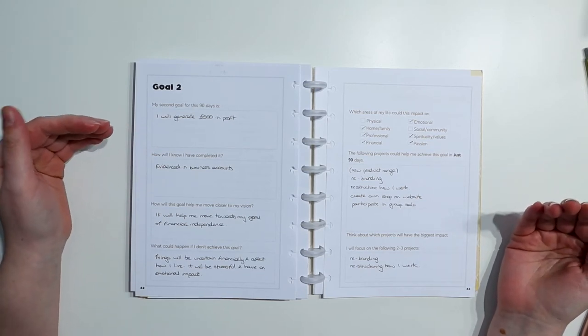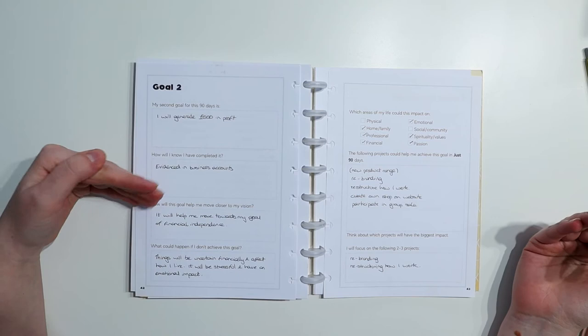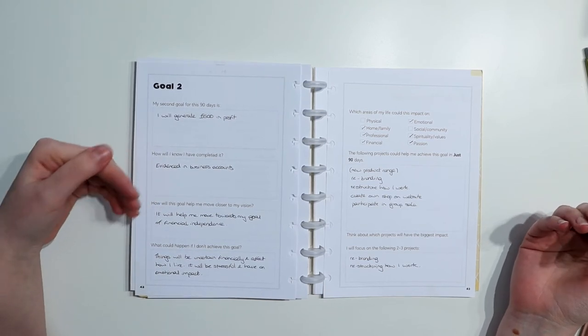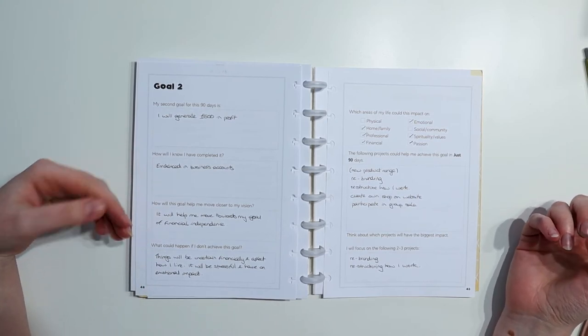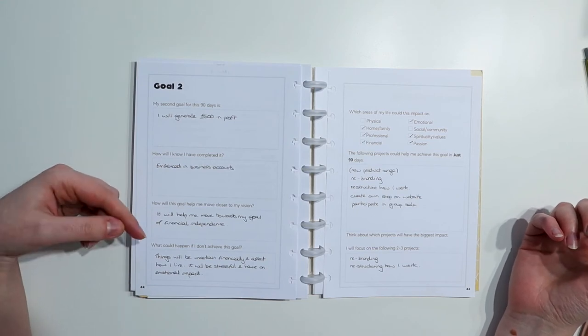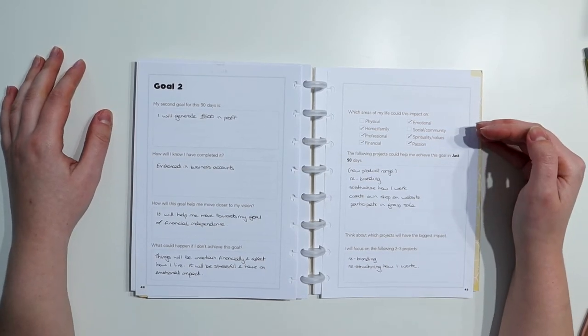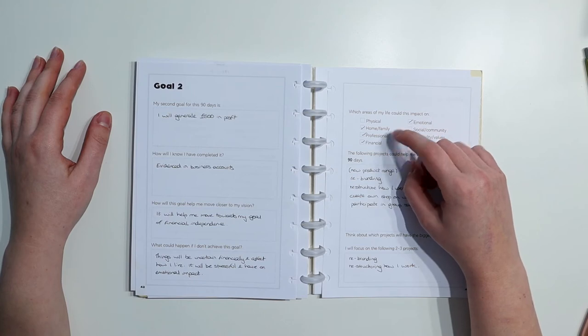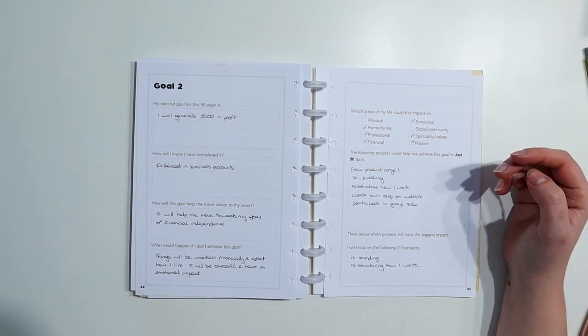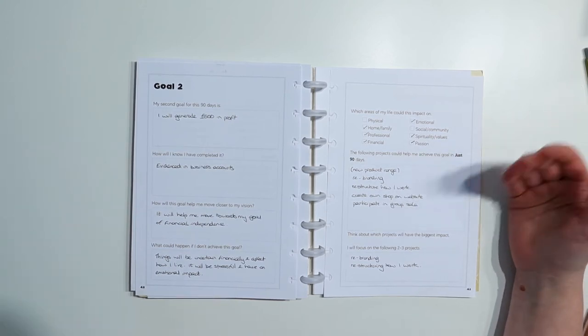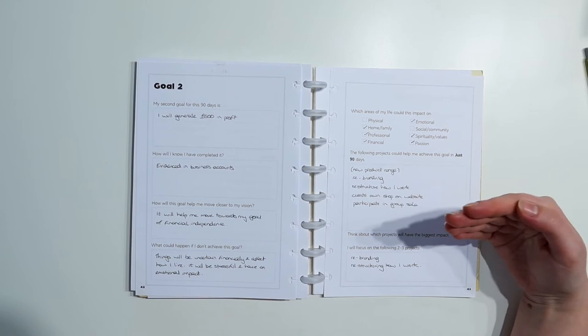So I'd done a home, family, personal goal, and this was my business goal. And also linked to finances. So I'll generate £600 in profit. How will I know it's completed? Well, it will be evidenced in my business accounts. How will it help me move closer to my vision? It will help me move towards my goal of financial independence. What could happen if I don't achieve the goal? Things will be uncertain financially and affect how I live. It will be stressful and have an emotional impact. Which areas of my life could this impact on? I said home and family, professional and financial, emotional, spirituality and values, and passion. So something that big that's going to have such an emotional impact is going to impact on all these different areas.